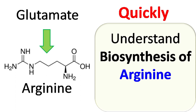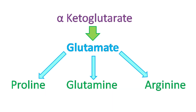Hey everyone, quick biochemistry basics here. Let's talk about biosynthesis of arginine. Arginine is synthesized from glutamate, which is in turn synthesized from alpha-ketoglutarate, which is a product formed during the TCA cycle.